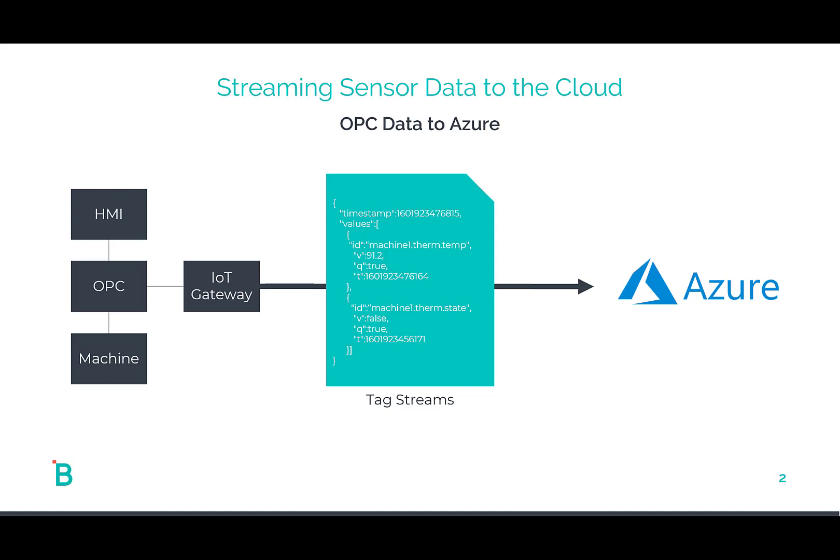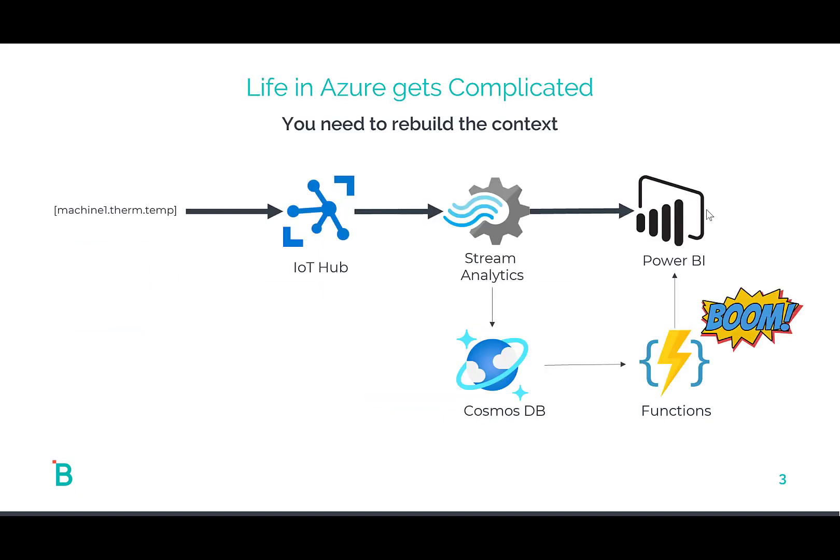But here's the problem. 80% of the use cases in the cloud do not want to deal with tags or discrete streams of data. They want to deal with well-modeled objects.